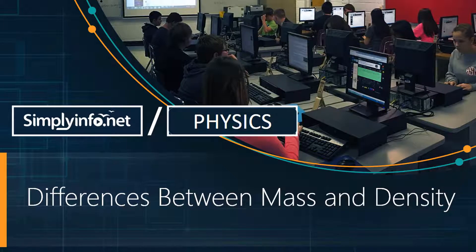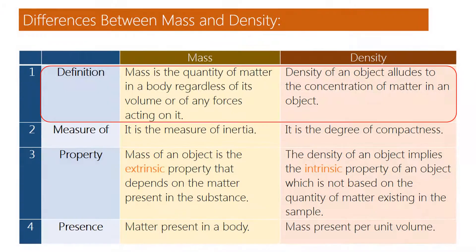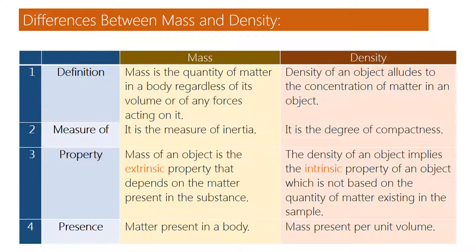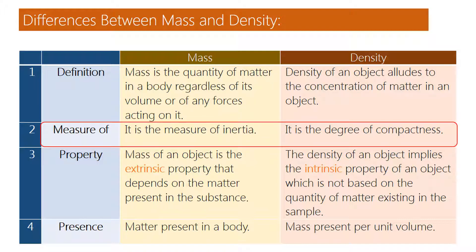Difference between mass and density. Mass is the quantity of matter in a body, regardless of its volume or of any forces acting on it. Density of an object refers to the concentration of matter in an object.